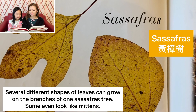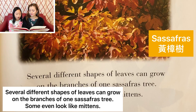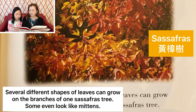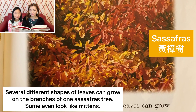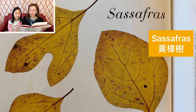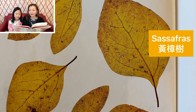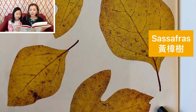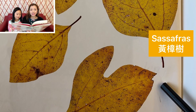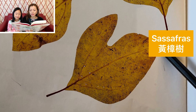Sassafras. Several different shapes of leaves can grow on the branches of one sassafras tree. Some even look like mittens. 黄樟树。黄樟树很有趣，同一棵黄樟树上面，它的叶子可以是不同的形状的。有些的叶子甚至像一个手套一样，而且黄樟树叶子有的时候并不对称。